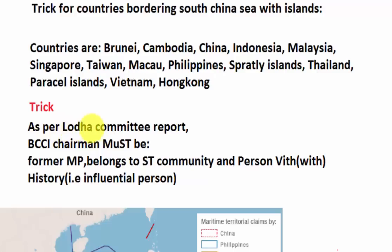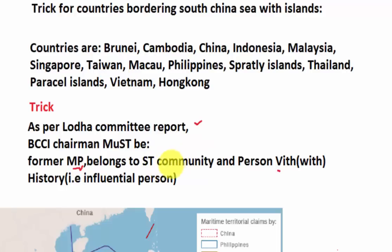The trick is based on the Lodha Committee Report, which was regarding reforms in BCCI. According to the Lodha Committee, the BCCI chairman must be a former MP, belong to the ST community, and be a person with history — meaning an influential person. To remember this, think of the present BCCI chairman Anurag Thakur. He is an MP, so imagine he is from the ST community and is a person with history. He nominated himself as captain of the state cricket team to become chairman of the state cricket board, making him influential and historically notable.